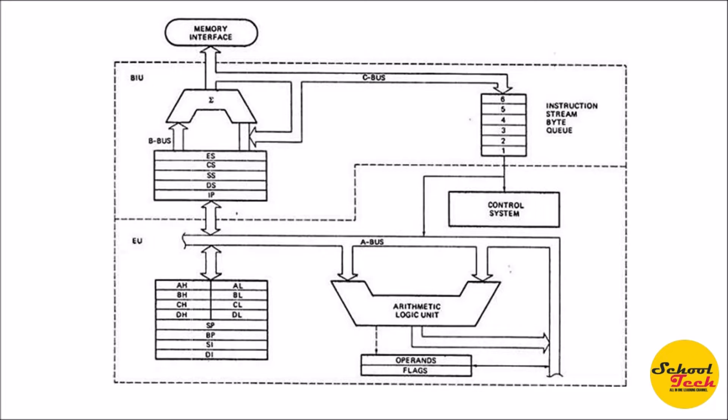BIU is the first logical part of the processor responsible for fetching instructions, and it contains the following blocks. There is a 6-byte instruction queue used to store the instructions of the program fetched by the BIU. This queue is FIFO — first in, first out — like a shift register, such that BIU fills the queue and EU empties the queue for execution.